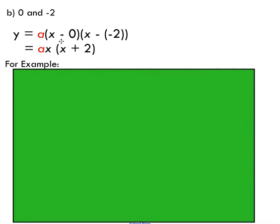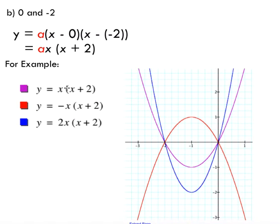So a similar situation as before, I don't have enough information to determine what my a value is, but I could just sub in random values for a just to see what the family of quadratics would look like. So I've done that here. I subbed in one, negative one, and two. As you can see, all of these quadratics pass through the x-intercepts of zero and negative two. But again, I'm not able to determine which quadratic I'm referring to here without my a value.